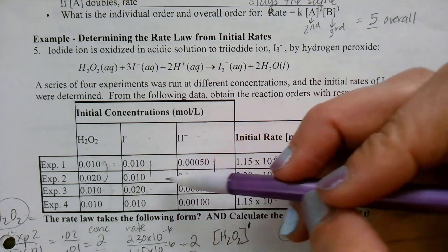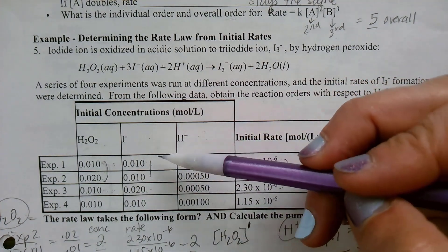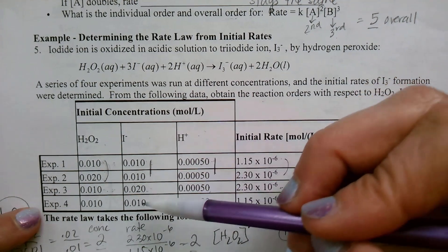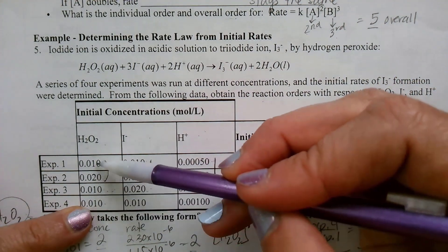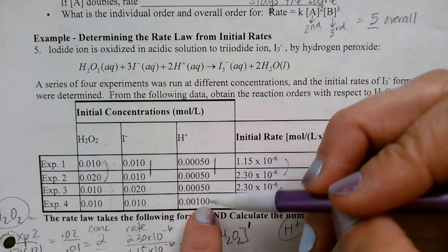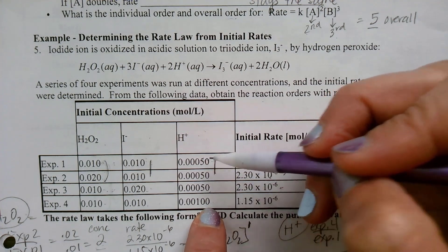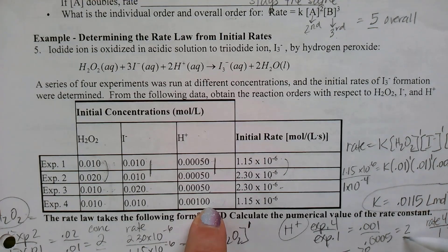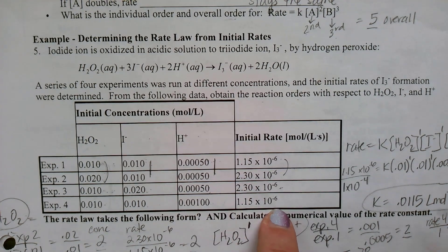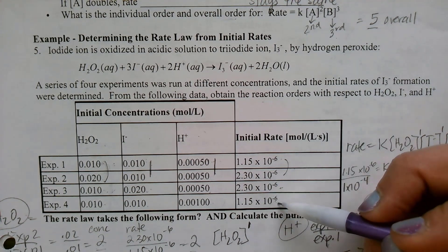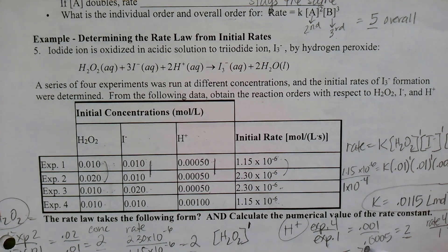Now let's look for H⁺. We need experiments where H₂O₂ and iodine stay the same — I chose experiments 4 and 1. Both H₂O₂ and iodine are 0.01 and 0.01 in those experiments. The H⁺ concentration in experiment 4 divided by experiment 1 gives 2 — it doubled. But when I computed rate 4 divided by rate 1, I got 1. The concentration doubled but the rate stayed the same, so H⁺ is 0th order.